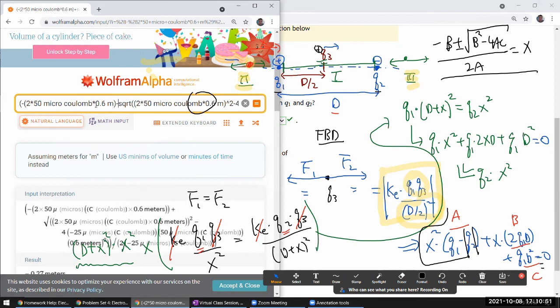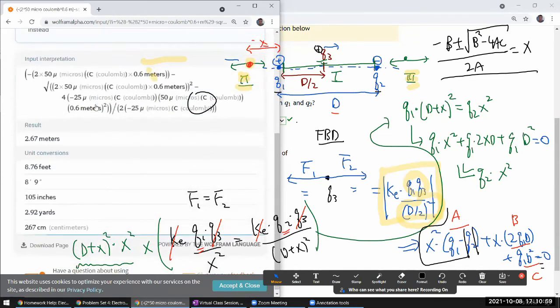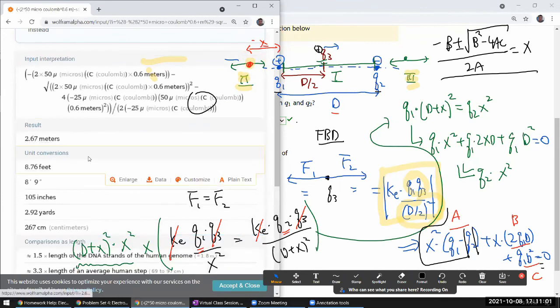Let me on the plus minus side, let me now go minus. One of the solutions didn't give me a sensible answer, so I'm trying the other one, hoping that it'll give me the sensible answer. So it gives me, aha, there it is 2.67 meters. Let's give that a try.